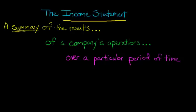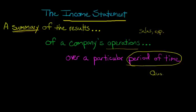By summary, we're going to have all these things kind of laundry listed. And it's of a company's operations. And by operations, we're talking about things like sales, expenses, all these different things that happened to the company financially during a period of time. This could be a quarter, it could be a year, it could be a month.